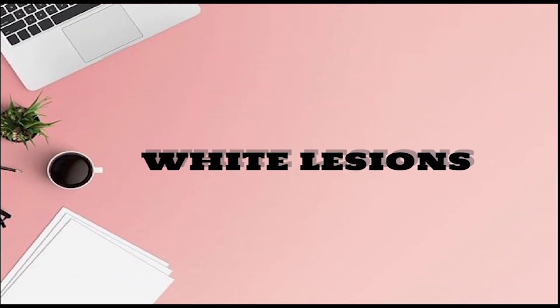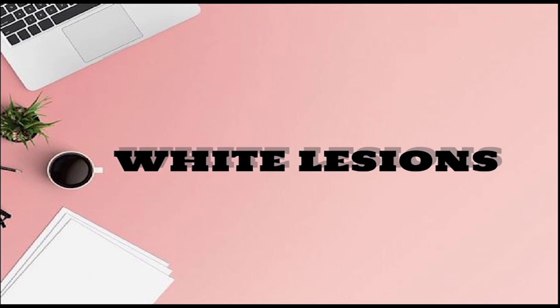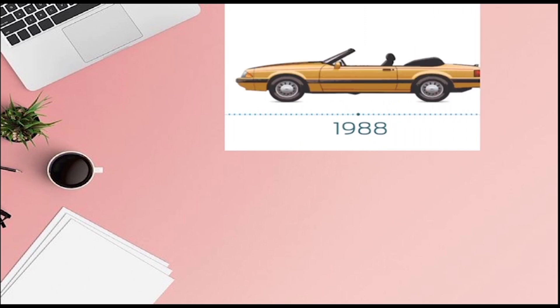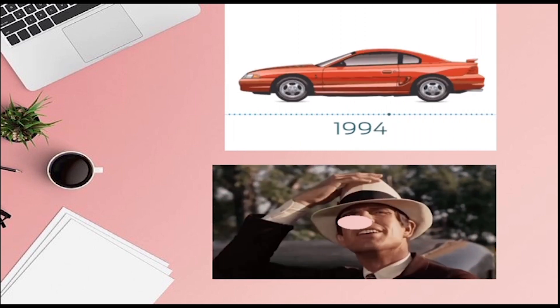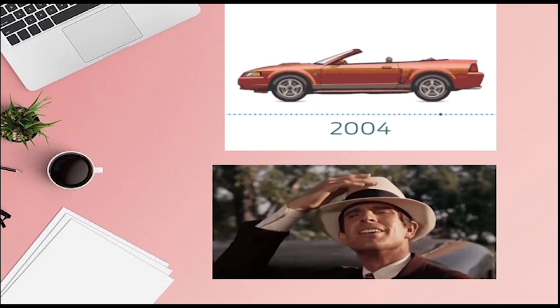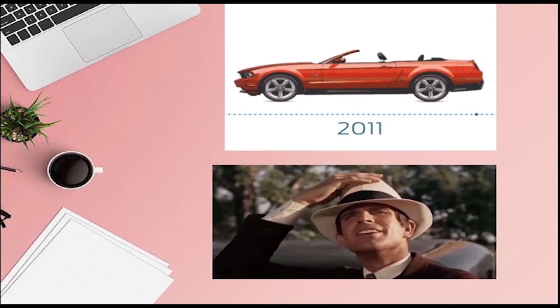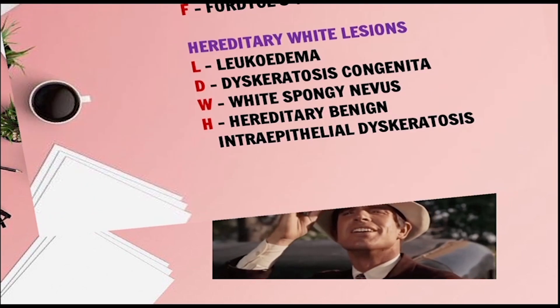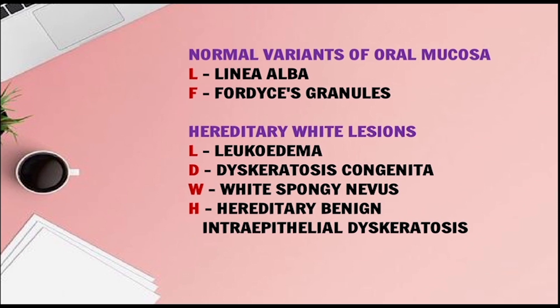Now let's start with the next classification — white lesions. The mnemonic is: 'A line of Ford from which entered Luke in a white dress and hat.' Normally he comes in a huge line of Ford and enters from one Ford. L for Linea Alba, F for Fordyce Granules — normal variants of oral mucosa.